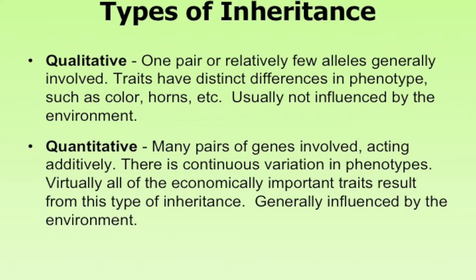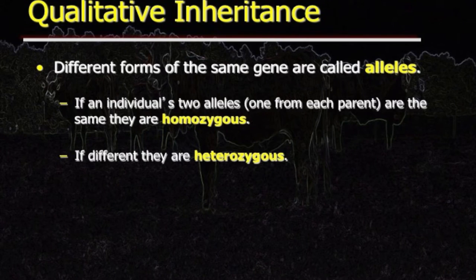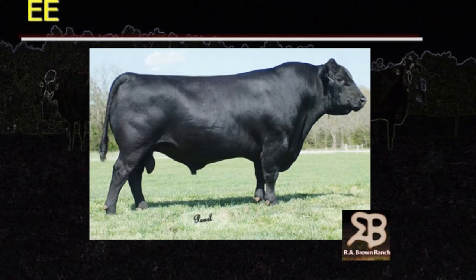To reiterate: in qualitative inheritance, different forms of the same gene are called alleles. If an individual's two alleles — one from each parent — are the same, they are homozygous. If they are different, they are heterozygous. Now let's look at some simple color inheritance examples.